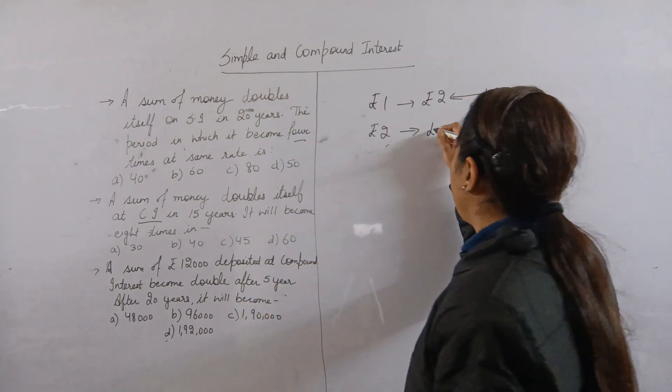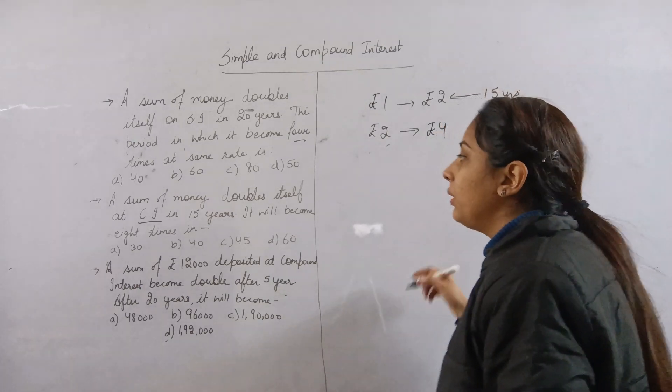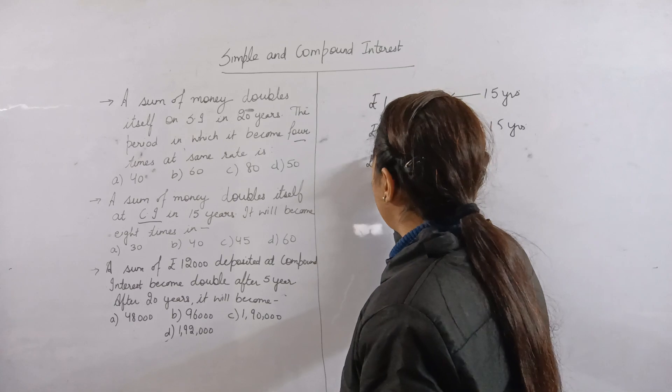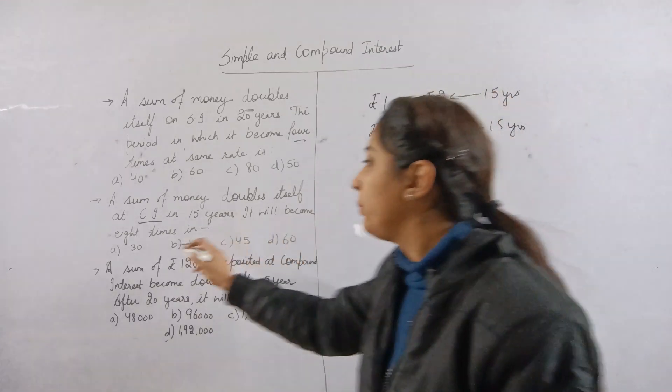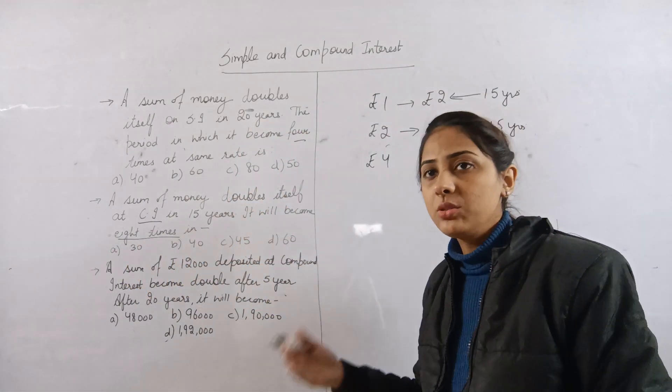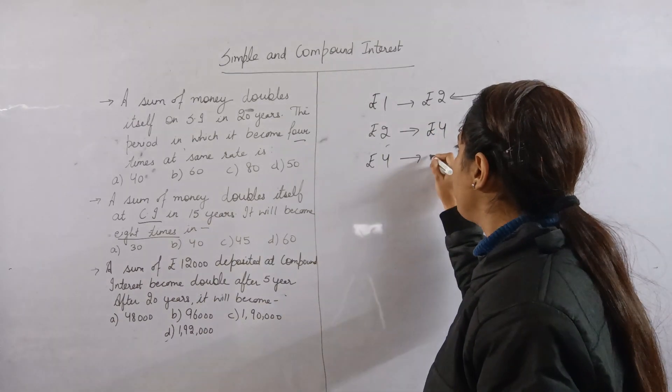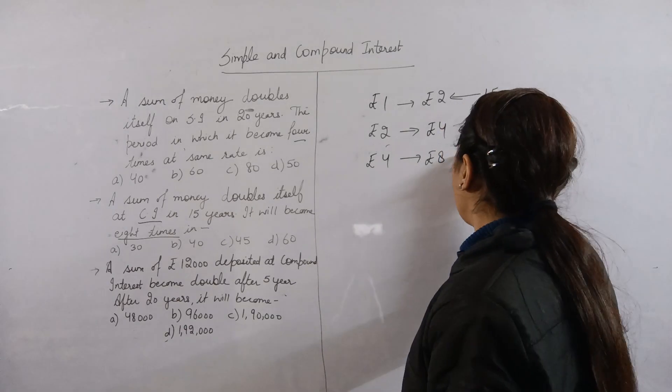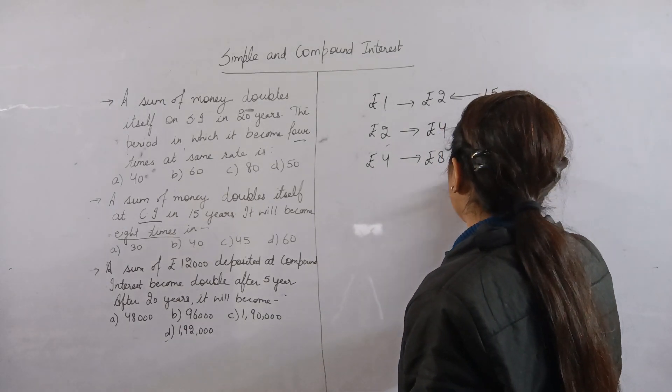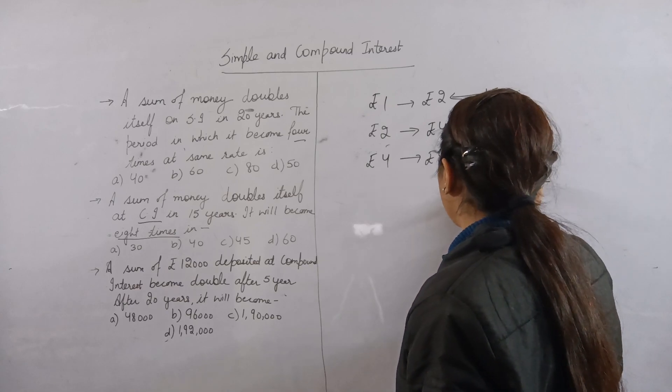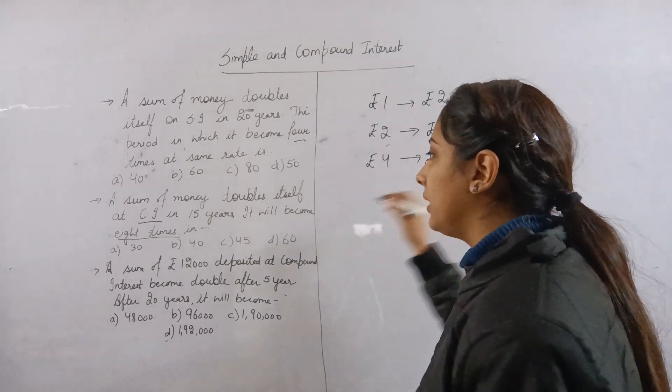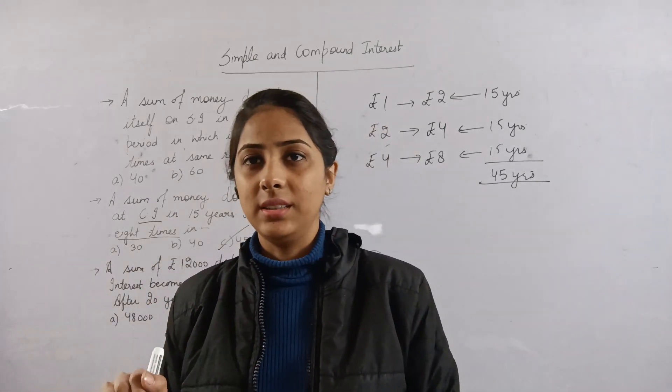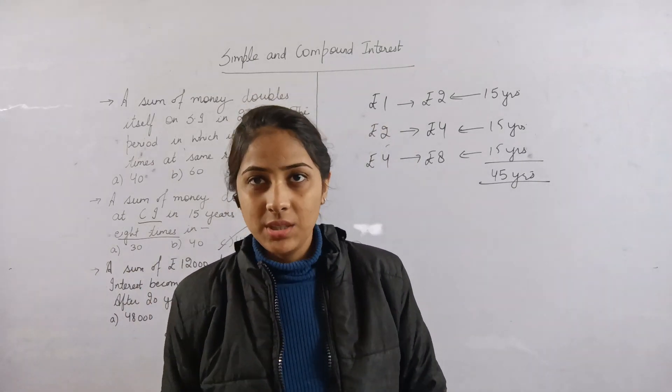In the next 15 years, the amount will become 4, and in another 15 years it becomes 8. So if it doubles every 15 years, then to reach 8 times, the total time is 45 years. Do you understand the question?